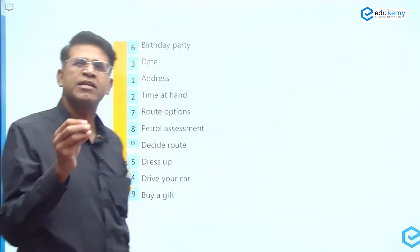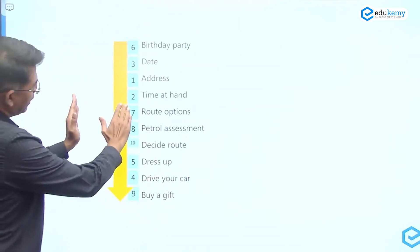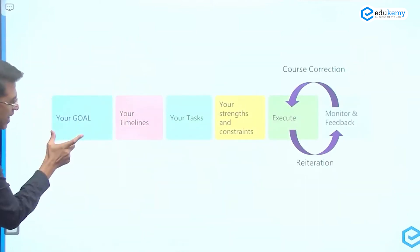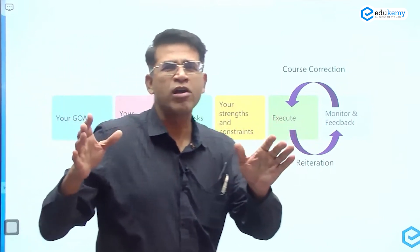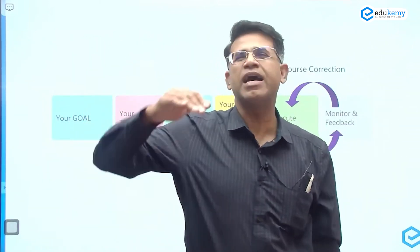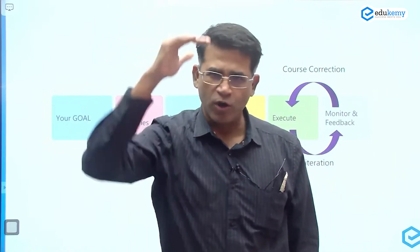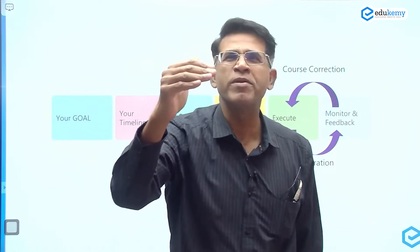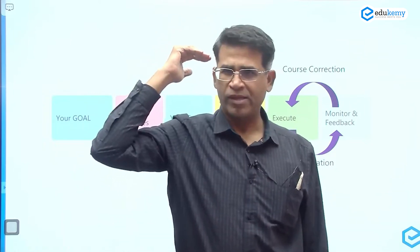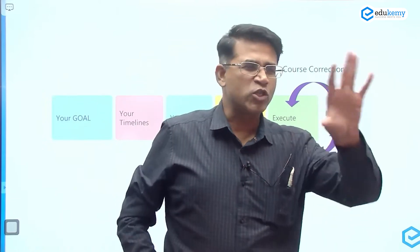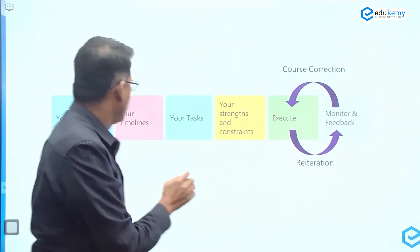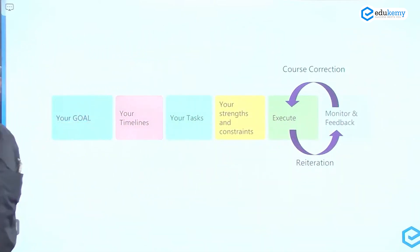For simple tasks like going to a party, using this analogy — this is what you should be doing generally. You should first have your goal. The goal is not just 'examination' — that is a higher-level goal. A goal could be to compete in GS, one goal could be to compete in the optional, one goal could be to join some institute. Goals can have sub-goals, and your timelines must be very clear.